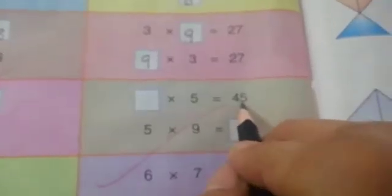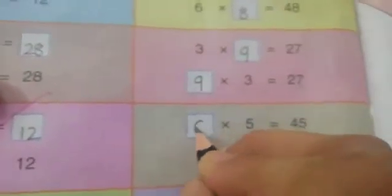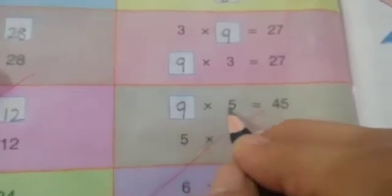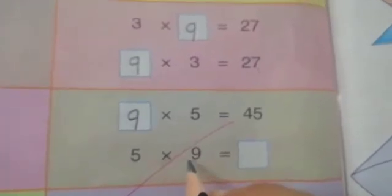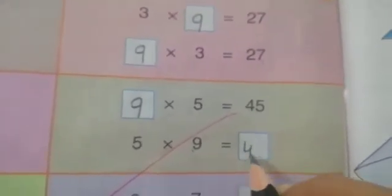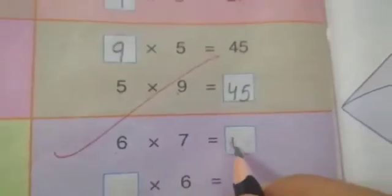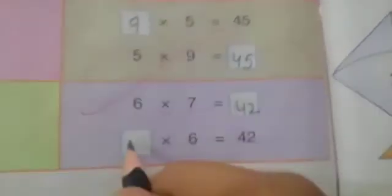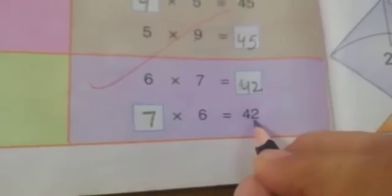9 multiply by 5 is equal to 45. So we will write here — 9 multiply by 5 is equal to 45 and 5 multiply by 9 is equal to 45. 6 multiply by 7 — 42. Now change the order — 7 multiply by 6 is equal to 42.